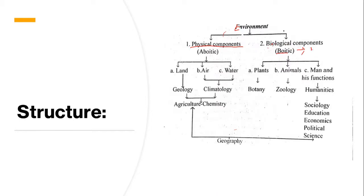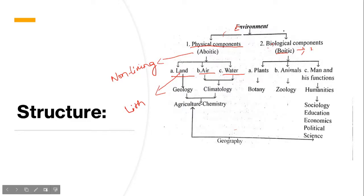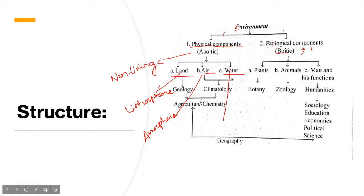Now getting back to the structure: when we talk about physical environment, we are mainly talking about the abiotic components — that is the non-living things, those which do not have life. Non-living things are mainly divided into three categories: land, air, and water. Very scientifically, land is called the lithosphere, air is called the atmosphere, and water is the hydrosphere.